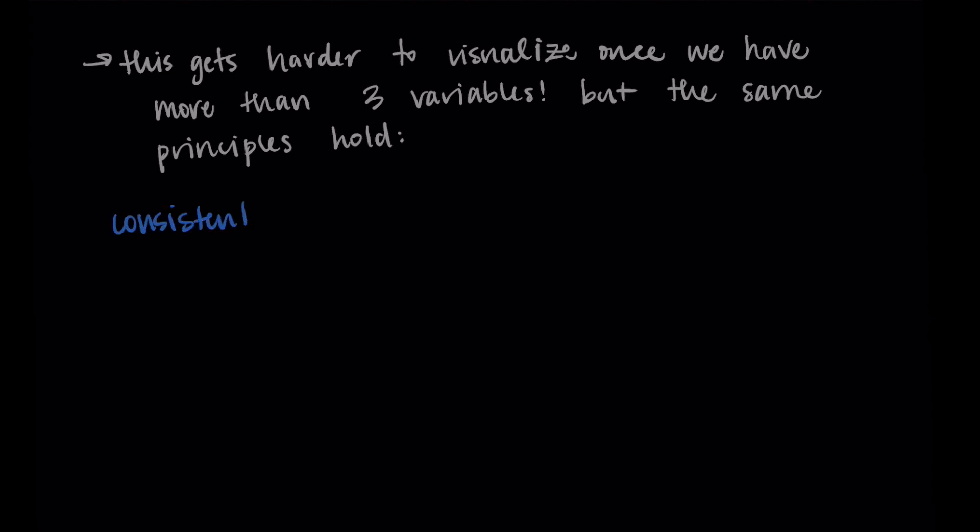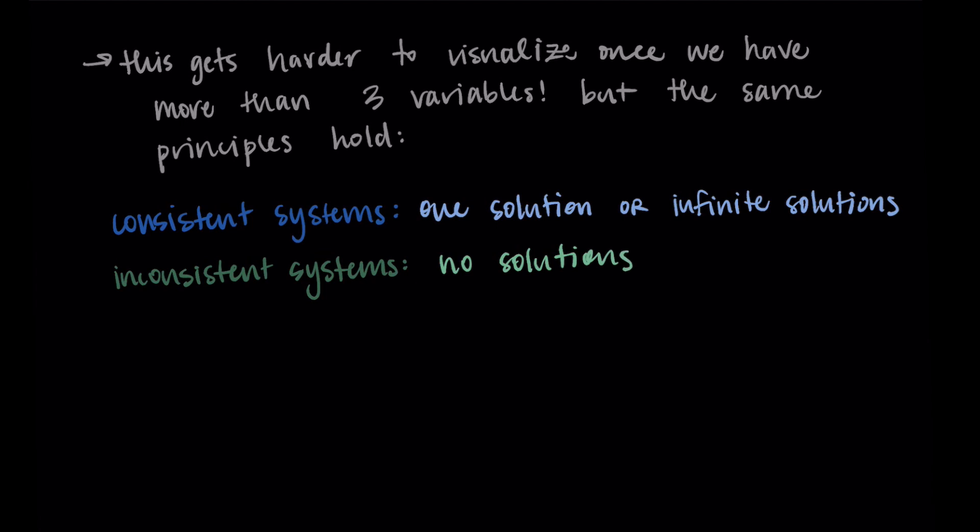The main idea here is that consistent systems will have one solution or infinite solutions, but the consistent system has a solution. There's at least a solution to it. However, an inconsistent system will have no solutions. There's nothing that makes it true. There are no answers.